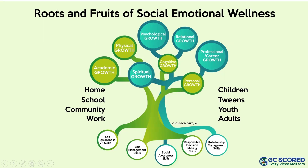From these seeds or roots, we see individuals in their diverse settings across the lifespan having fruits that show up as academic, physical, psychological, relational, professional, cognitive, spiritual, and personal fruits. Those are some of the fruits that come about as a result of these five social-emotional skills.